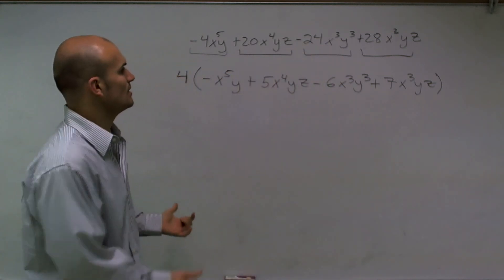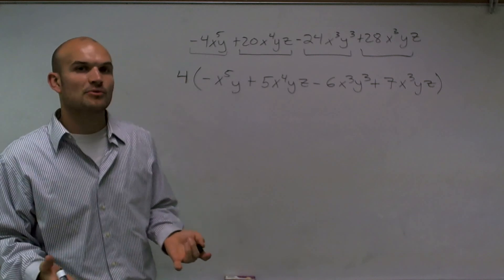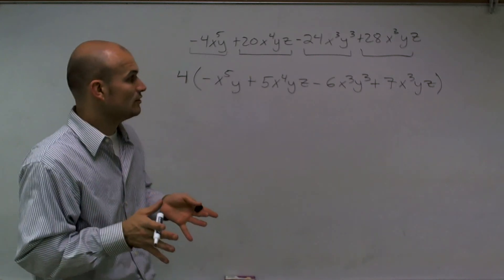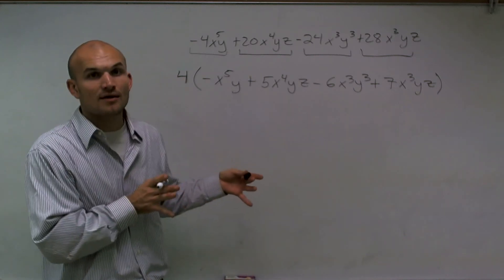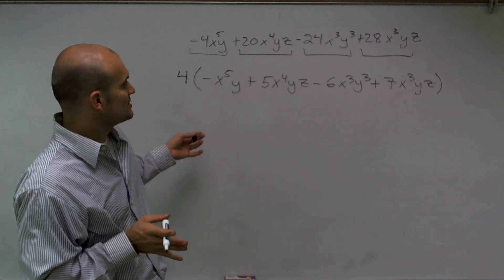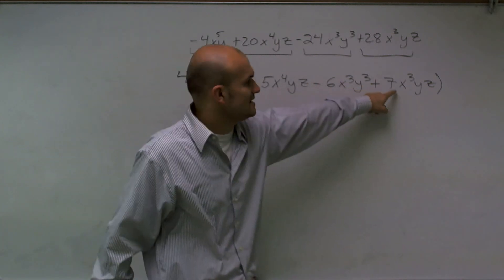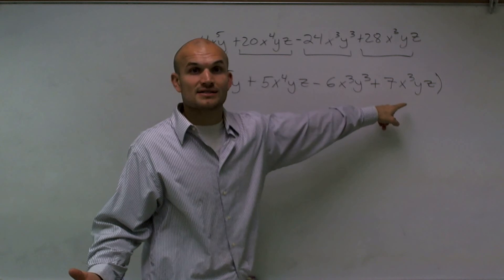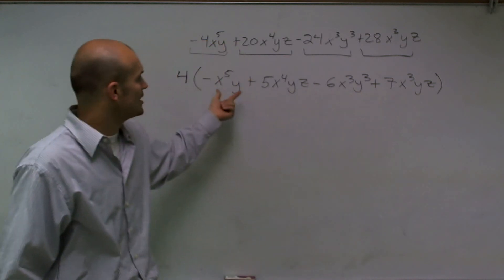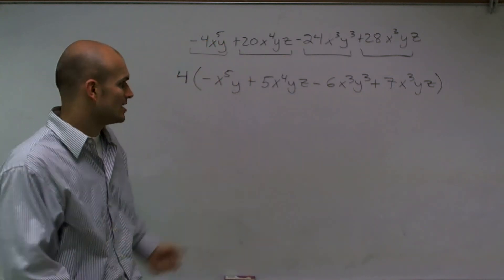Now the next thing is I want to look at these monomials and see what variables do all of them share. If they don't share the exact same variable, then I can't factor out. So you notice here I have a z and a z. So you might think, oh, I'd like to factor out a z, right? Well, since this monomial and that monomial do not have a z, you cannot factor it out.